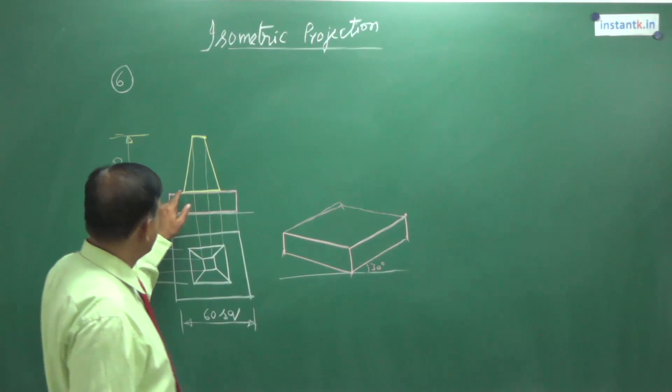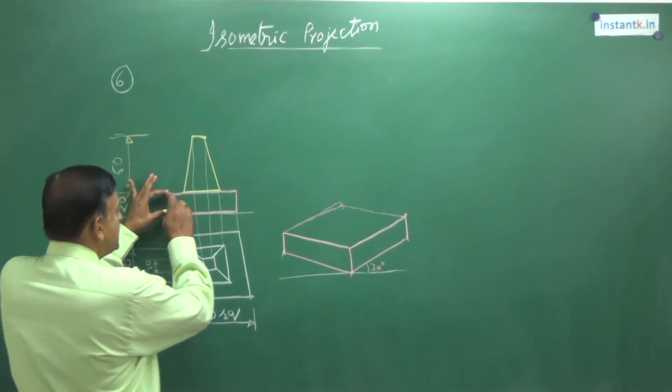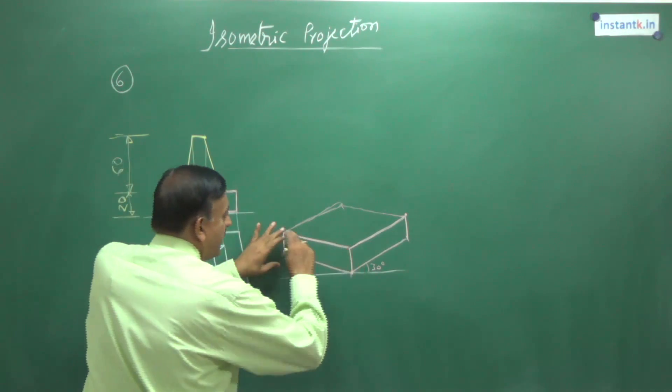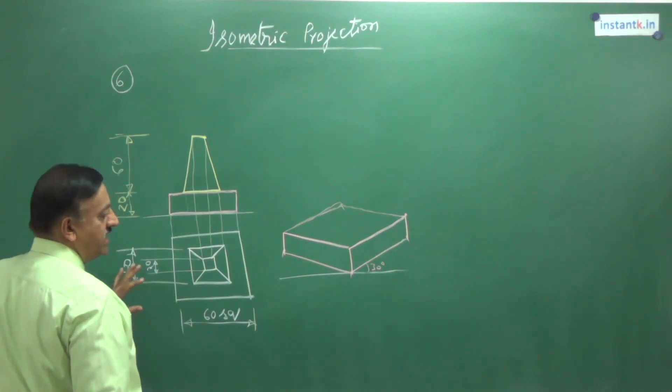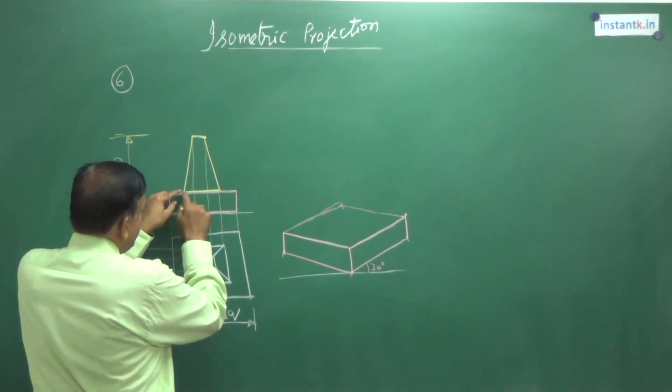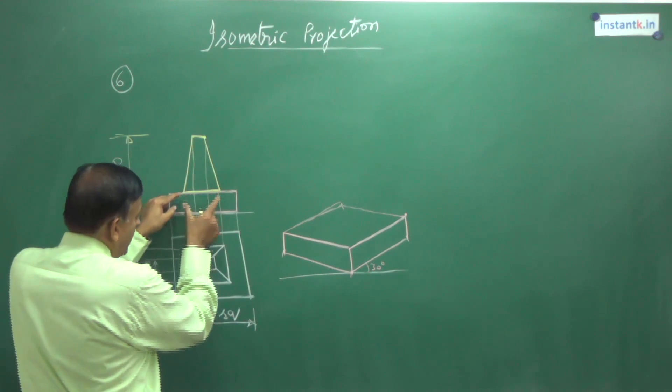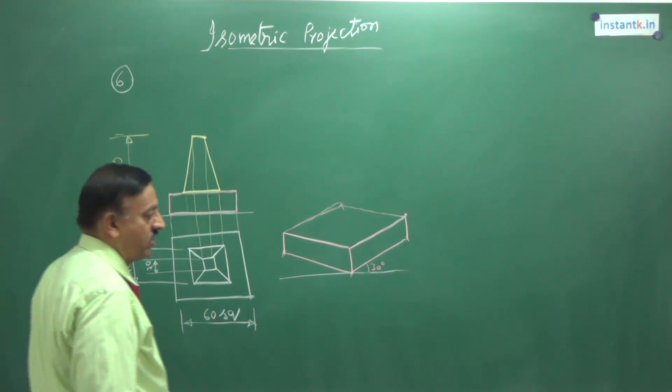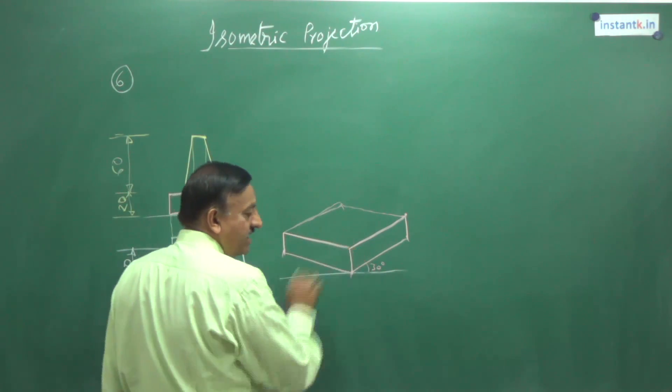That we can make in the end. Now, what we do is locate the base of this. This is the top face. At 20 mm height, I have made the top face here of the square block. Now, on that face, this is a 40 mm square. 40 mm square I have to draw.